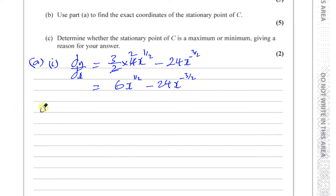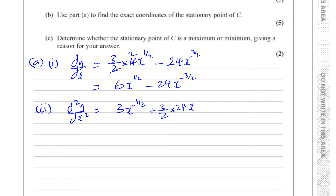Now part 2 asks us to find d²y/dx², so we differentiate dy/dx once more. We have a half times 6 which is 3, and x to the power of a half minus 1 is minus a half. Then minus 3 over 2 times minus 24 gives plus 36, and x to the power of minus 3 over 2 minus 1 gives minus 5 over 2. So d²y/dx² equals 3x to the power of minus a half plus 36x to the power of minus 5 over 2.